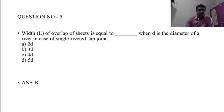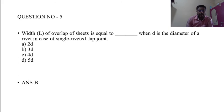Question 5: The width L of overlap of a sheet is equal to dash when D is the diameter of a rivet in case of a single riveted lap joint. Options: A) 2D, B) 3D, C) 4D, D) 5D. The correct answer is B: 3D.